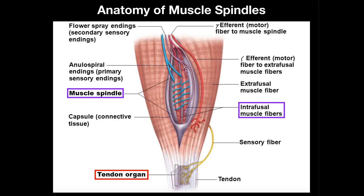Now we're going to talk about muscle spindles. Rather than measuring force, muscle spindles measure the amount of stretch in the muscle. They're also located in a different region — the Golgi tendon organ is located in the tendon, whereas muscle spindles are located within the belly of the muscle itself.